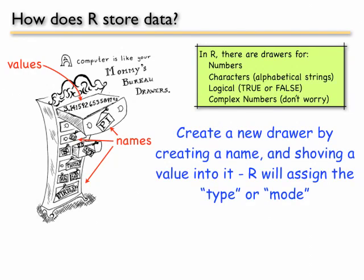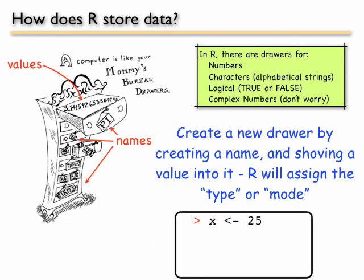You can create a new drawer or a new object by creating a name, for example x, and just shoving a value into it. R will automatically assign the type or the mode. So in this case we created a new variable x just by shoving the value 25 into it. So x is the name and 25 is the value. And if we check what is the mode of x, using the mode function, it'll return that it's numeric.